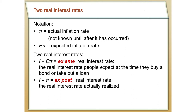The ex-ante real interest rate is what we get when we take the nominal interest rate and subtract expected inflation. The ex-post real interest rate is what we often see graphed in our time series graphs because that's what actually happens — we go back and do the actual measurements, see what happened to prices, and then subtract the rate of inflation from the nominal interest rate.